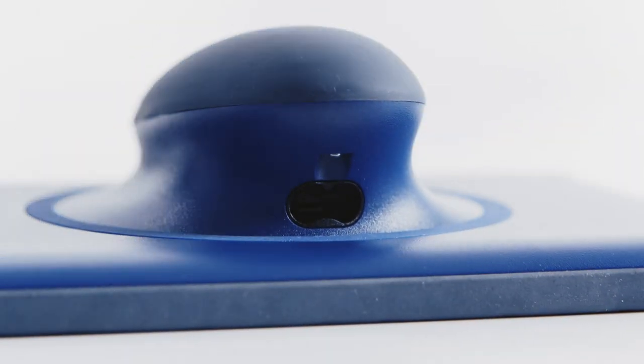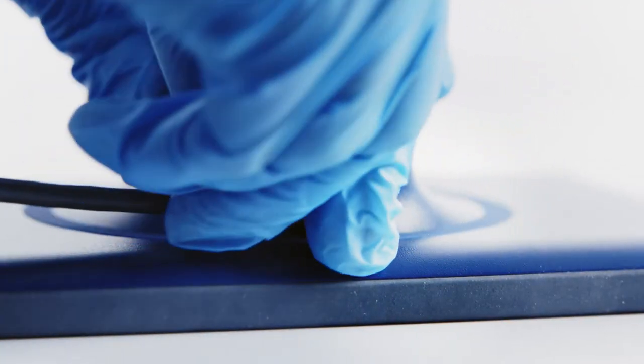To get started, attach the torso probe to the bridge in the port beneath the bridge's handle. Follow the grooves which guide the cable into place.